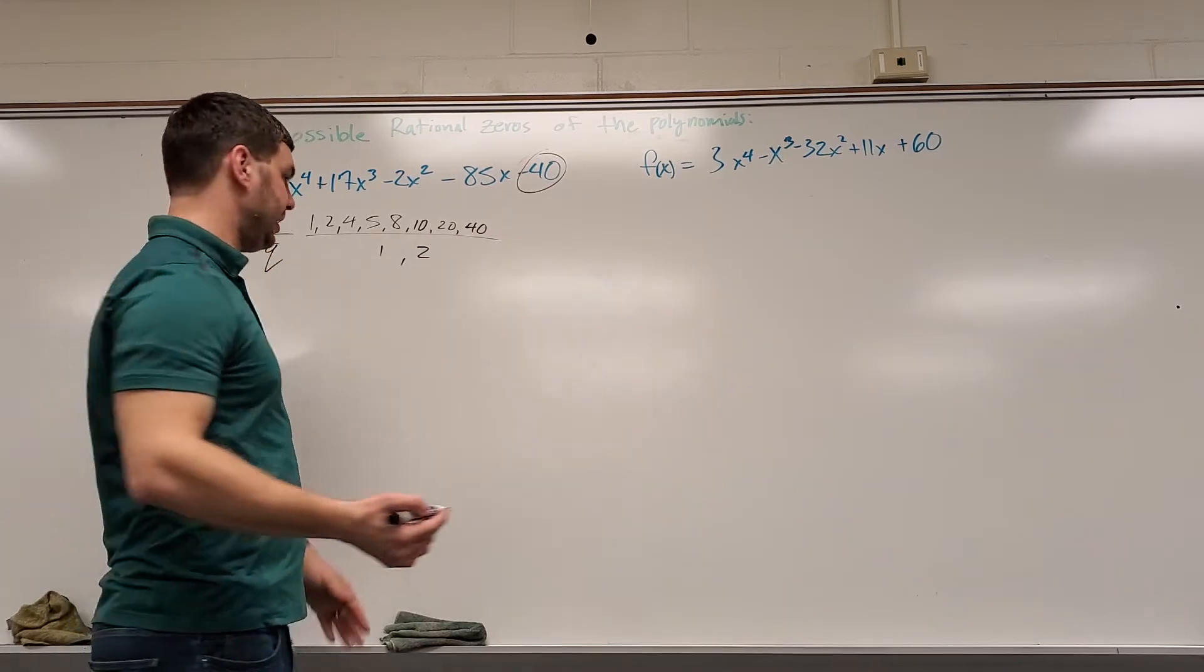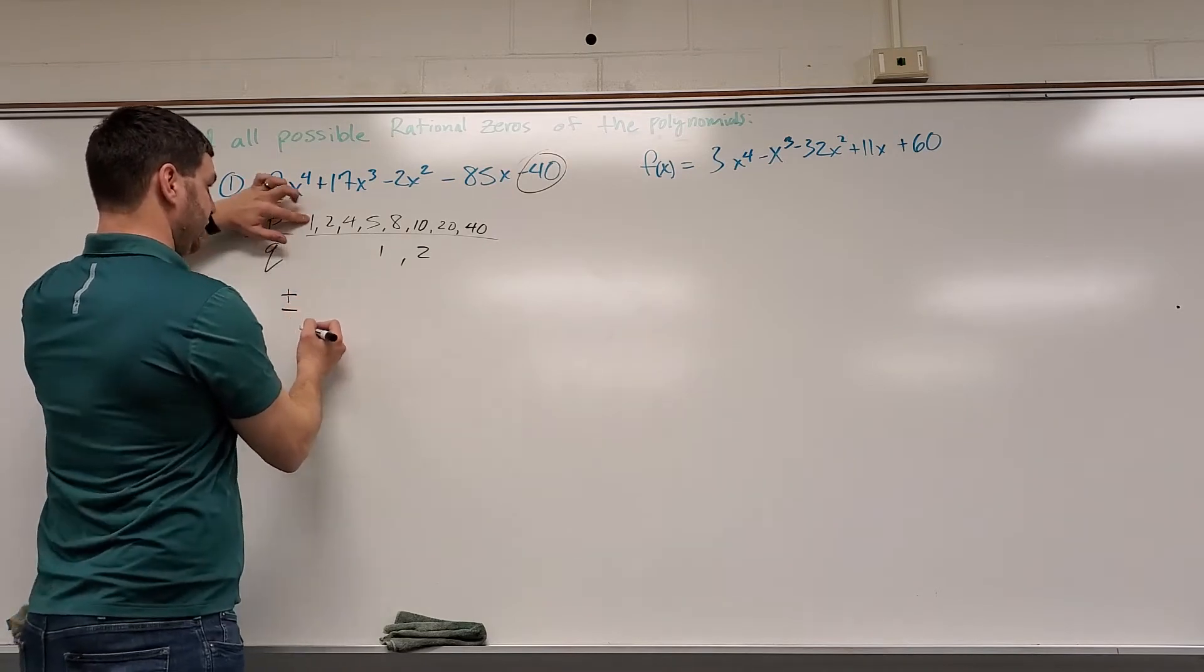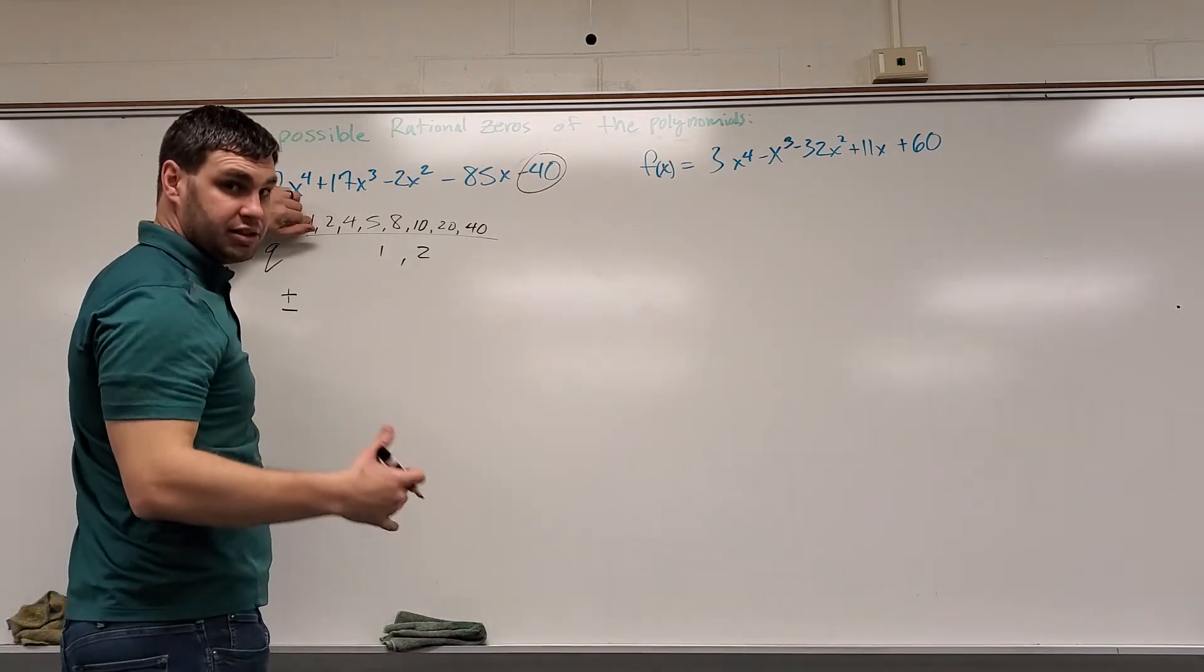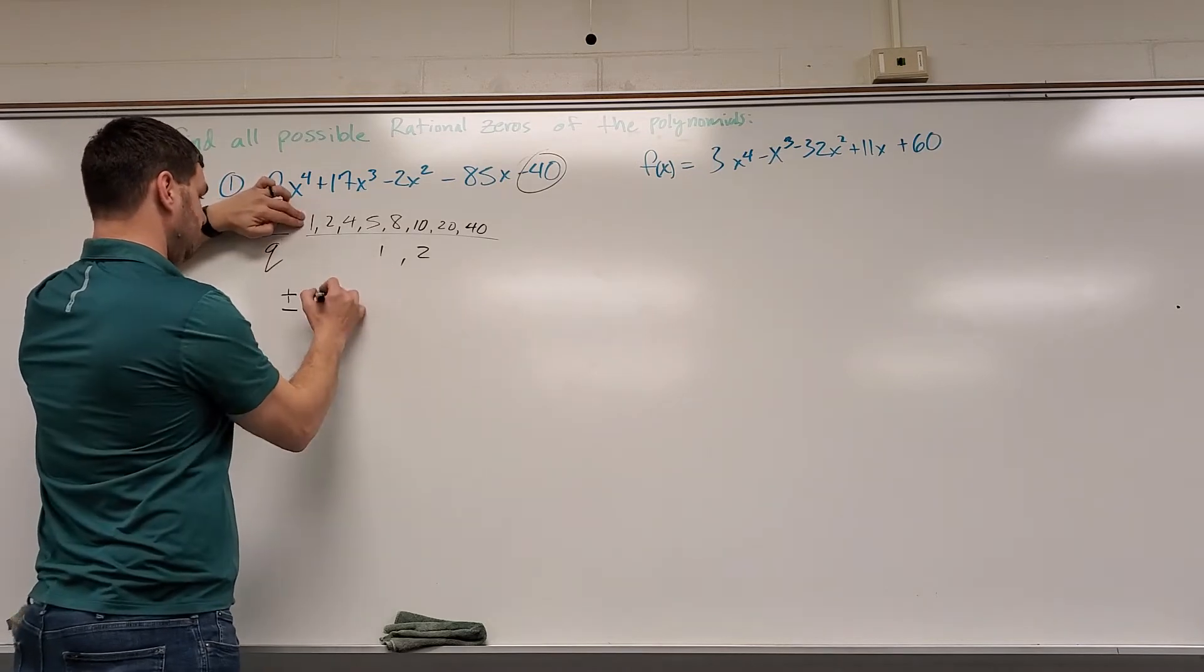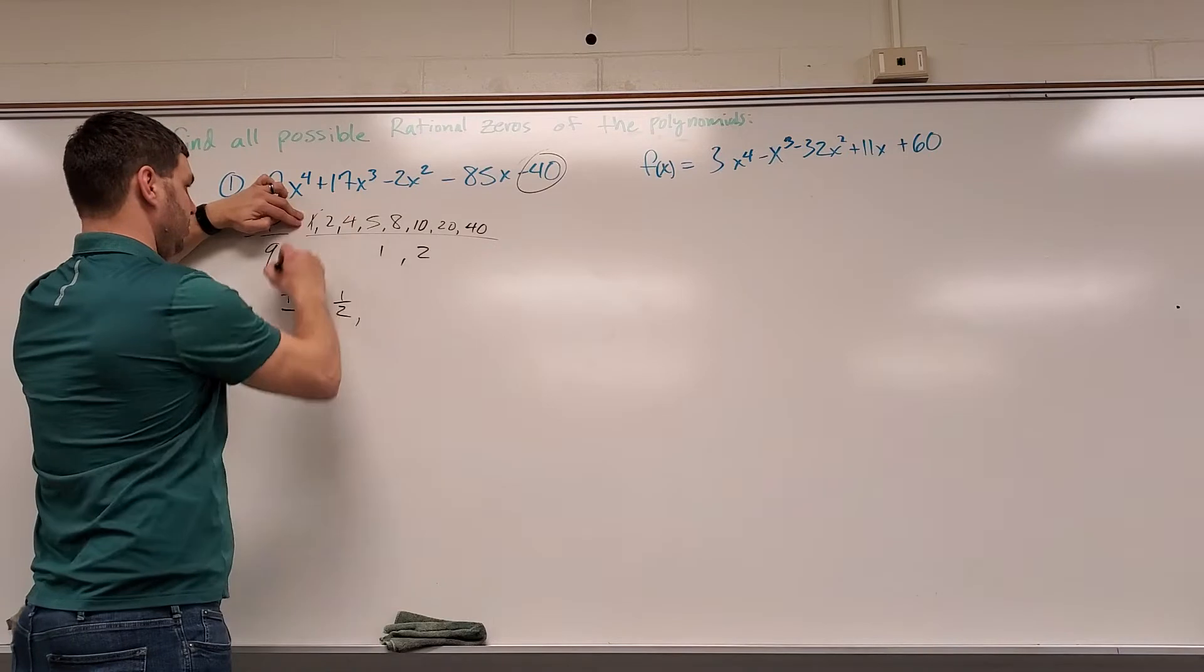But we don't want to list it out like this, we're going to list it out like plus or minus. I'm just going to go through each of these individually until I exhaust all the possibilities. So 1 over 1 is 1, 1 over 2 is 1 half, 1 is done.